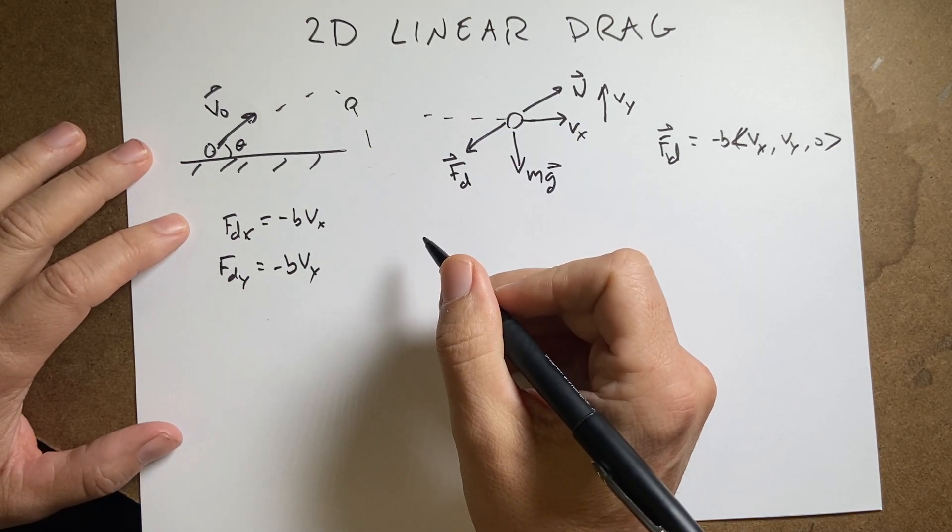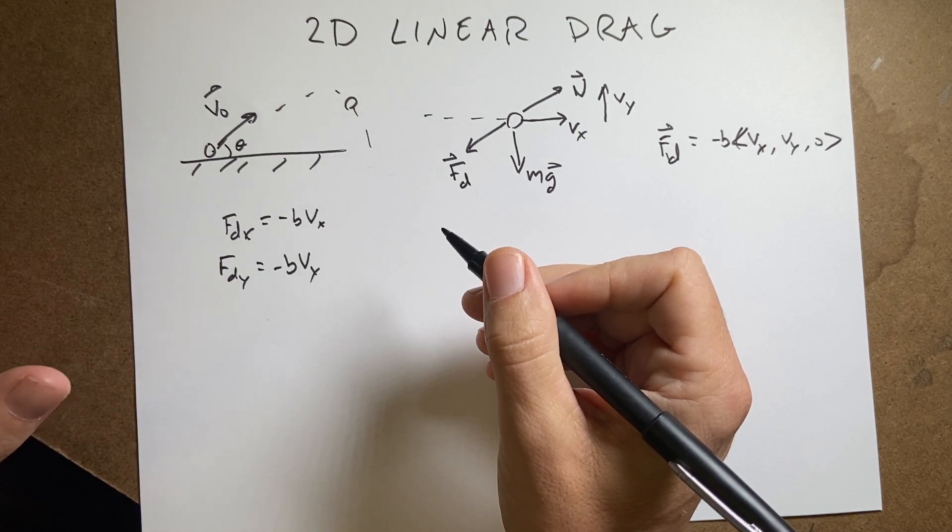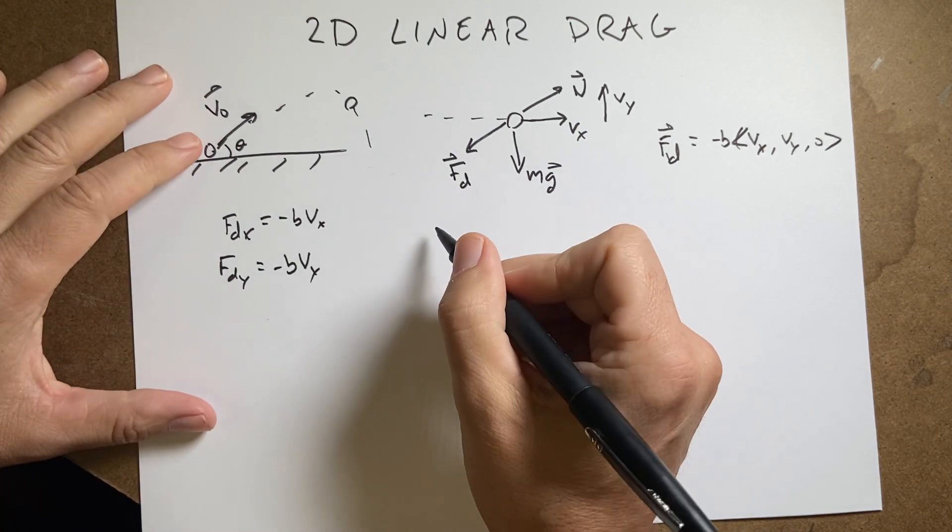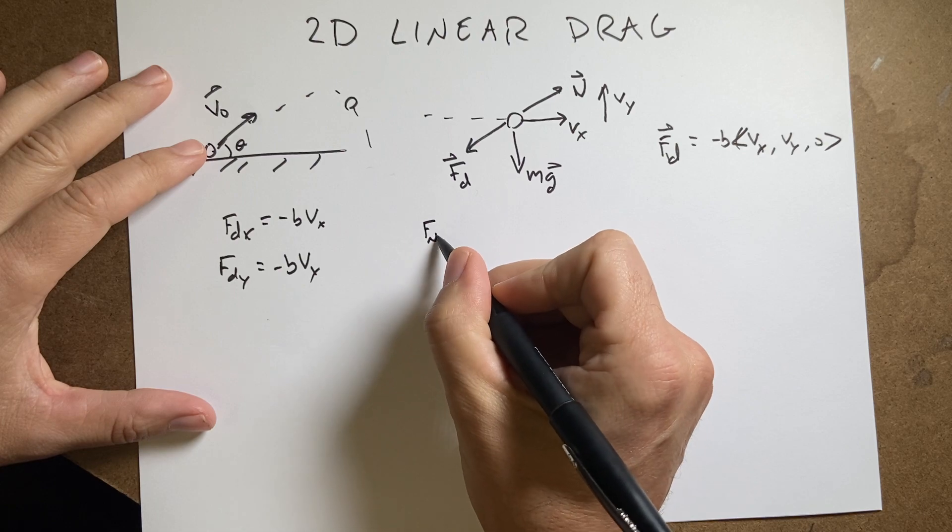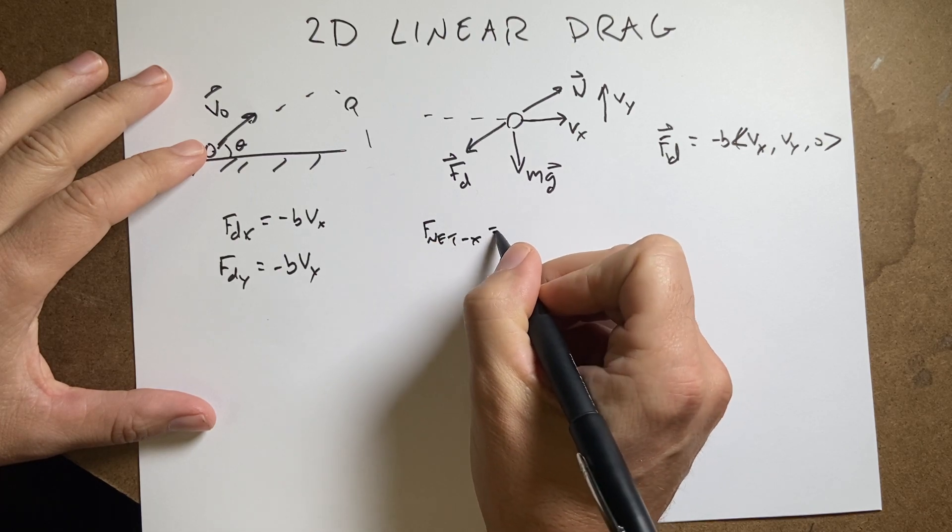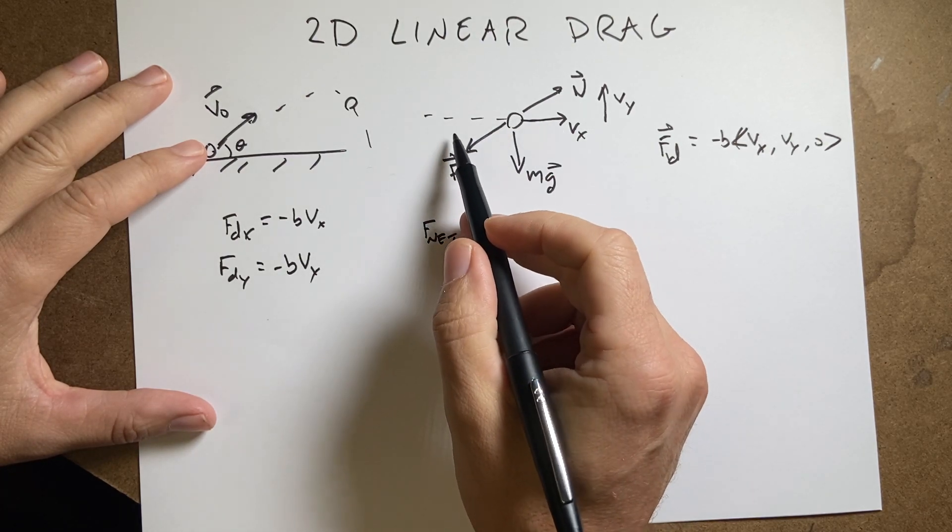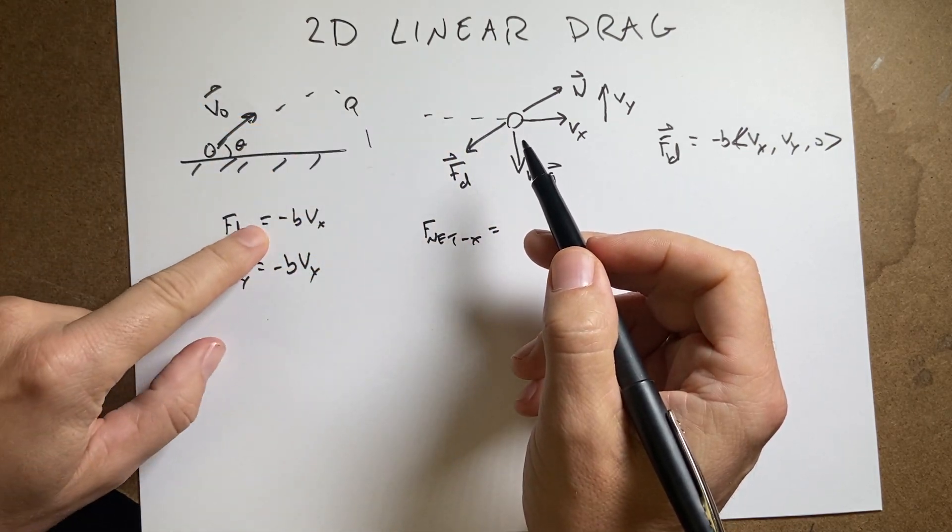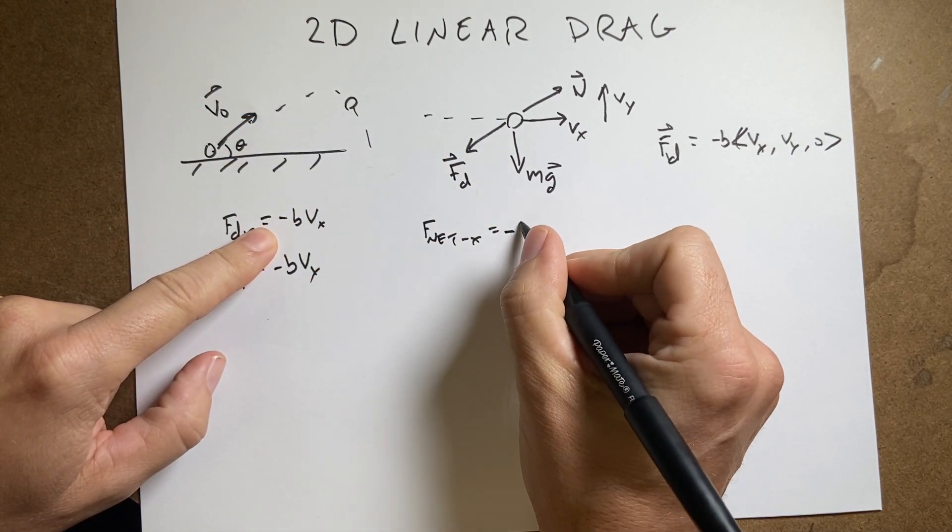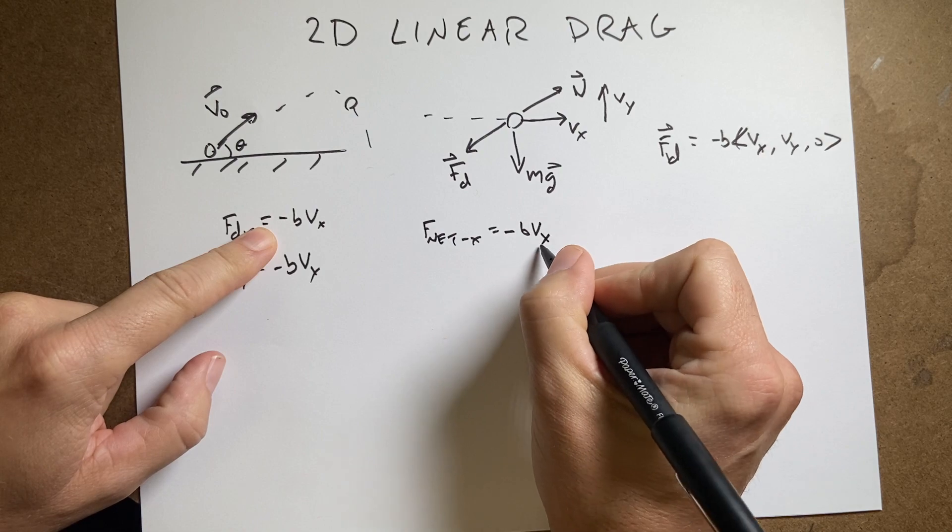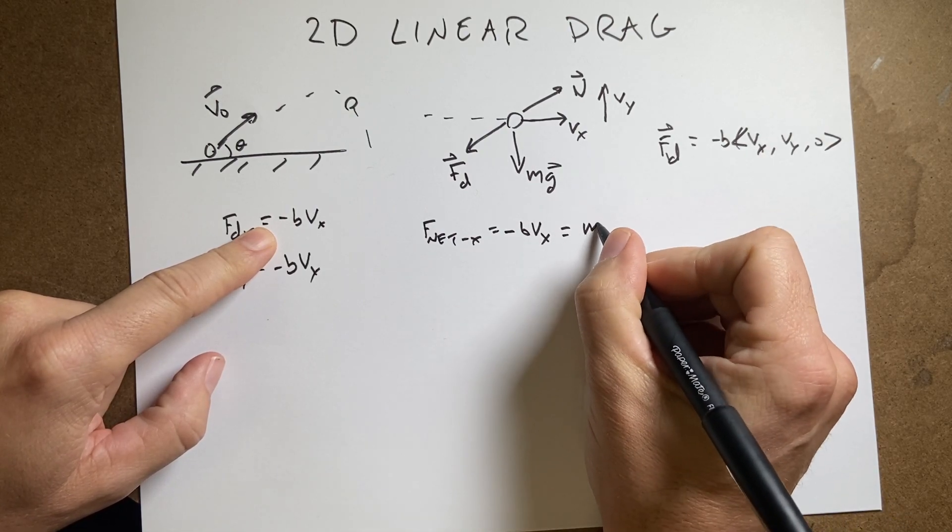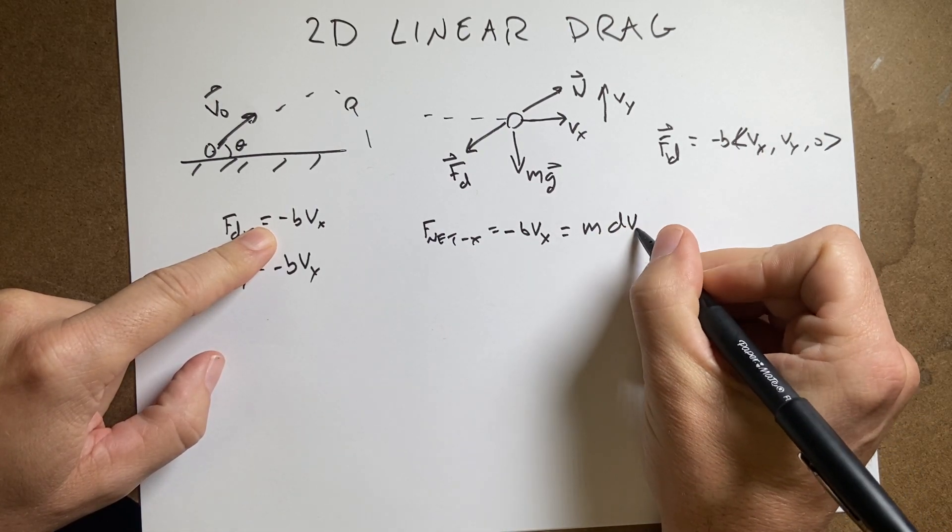So now I can write two equations. I can write an equation for the motion in the X and the equation for the motion in the Y. So in the X direction I have F net X equals, well what force are acting in the X direction, it's just this. But that's only negative BVx equals M dVx/dt.